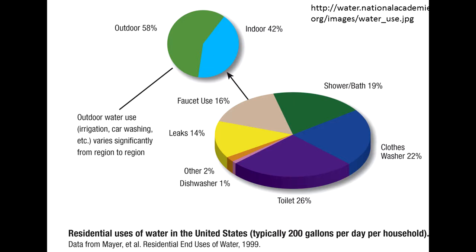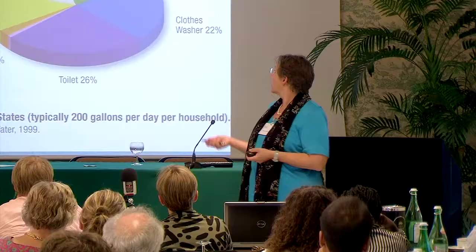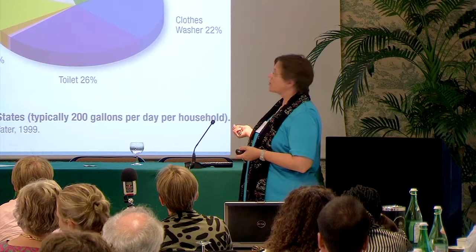Looking at residential water use: in the United States around the year 2000, each household used about 200 gallons per day — more than 600 liters. Dishwashers are not the main culprit. Toilet flushing is 26% of indoor water use, but indoor use is less than half of total household water use, because almost 60% goes into outdoor use — washing cars and irrigating lawns. About 20% goes to washing ourselves and 22% to clothes. Clothes washing could technologically be reduced significantly, as more efficient washing machines are possible.